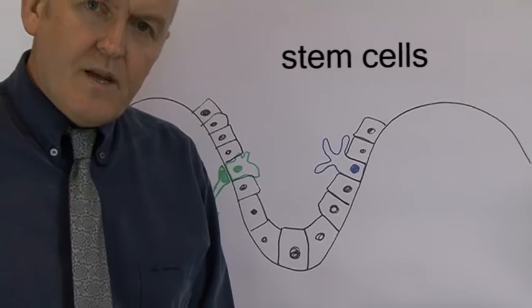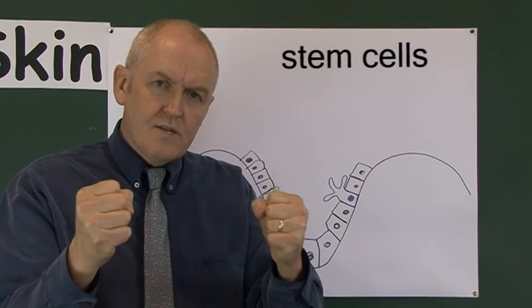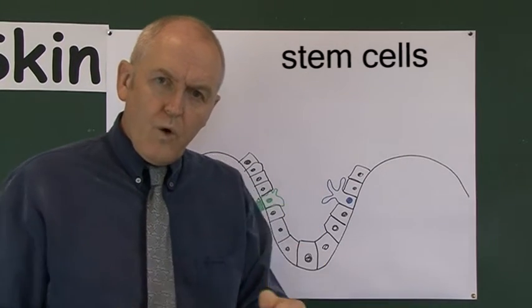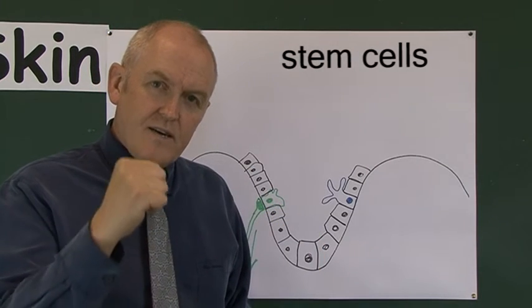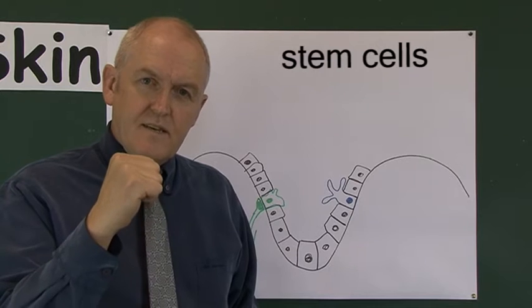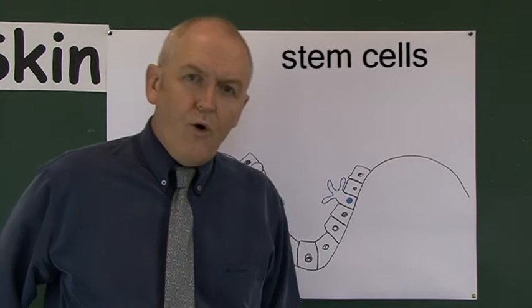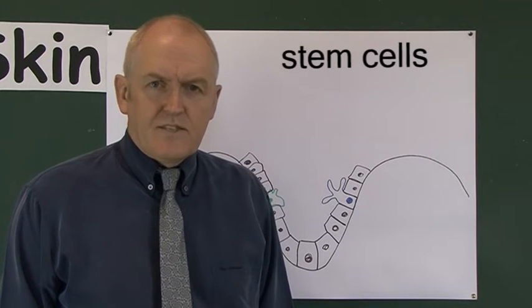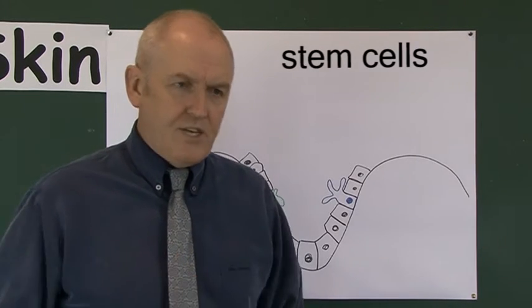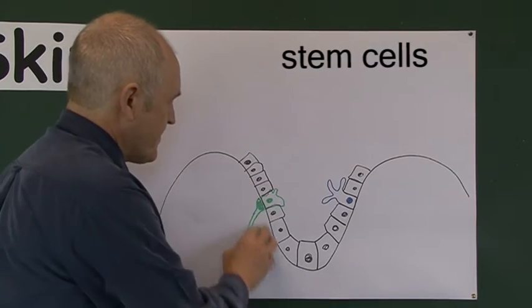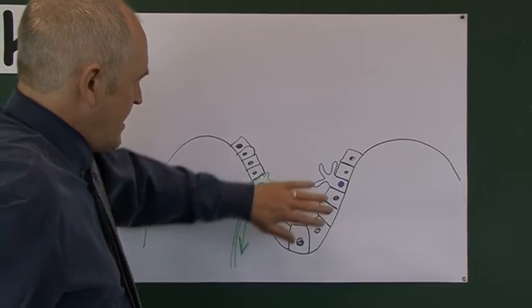From time to time, one of the keratinocyte stem cells will divide and produce two cells. One will stay as a stem cell waiting for next time, but the other keratinocyte produced will divide into two, each of those will divide again to give four, then eight, then sixteen — producing a small population of new keratinocytes.